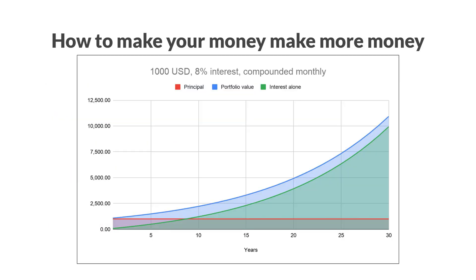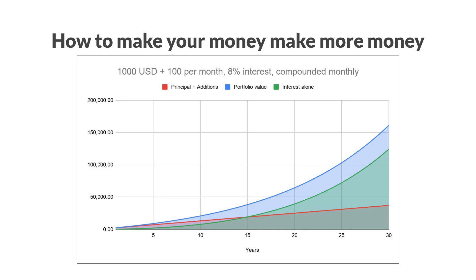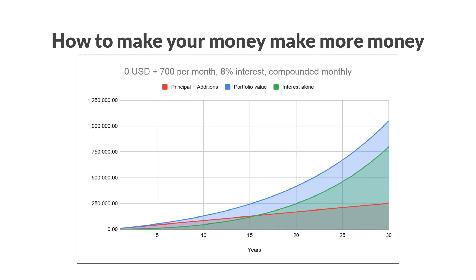For example, $1,000 invested at 8% return compounded monthly over 30 years turns into $10,935.73. If you started with $1,000 and kept adding $100 every month, that would turn into $160,965.25 after 30 years. While starting with zero and adding $700 every month for 30 years would create a nest egg worth $1,050,206.62. As you can see, compounding can be used to grow your existing money and even let you retire much sooner than expected.